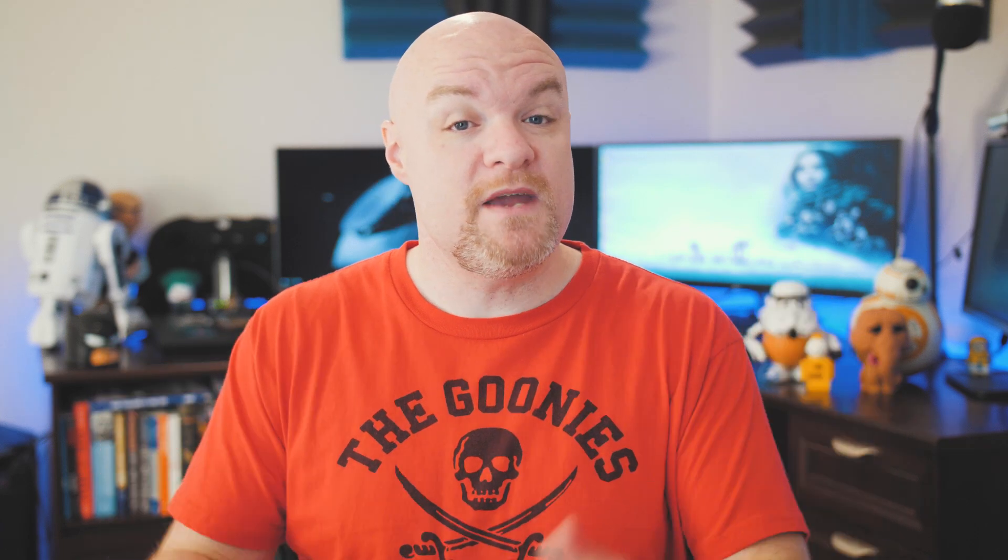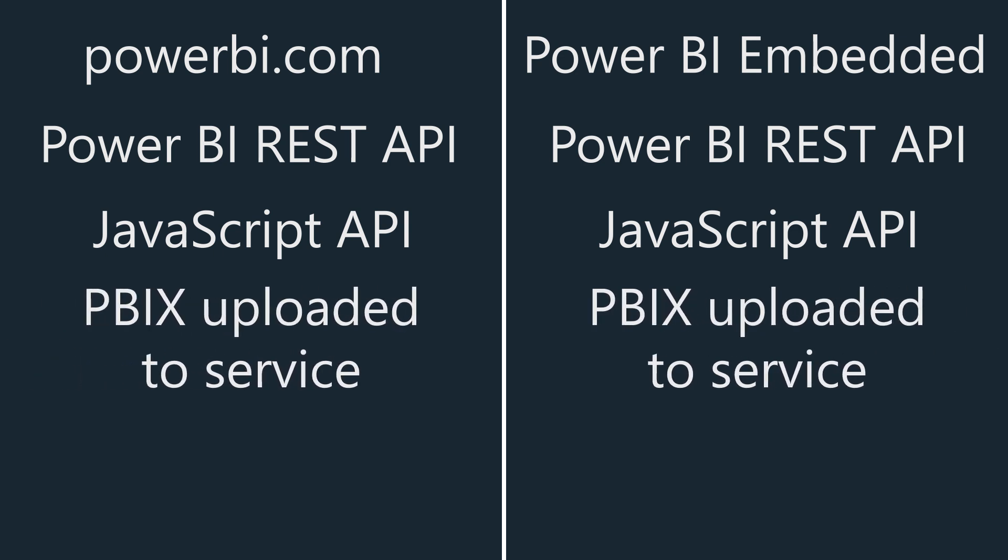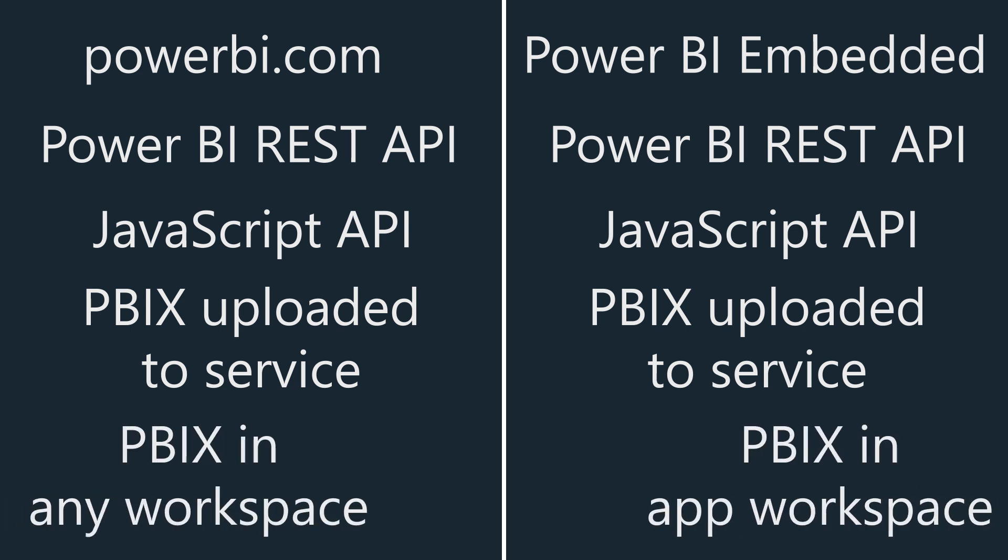In terms of the PBIX file — your report created in Power BI Desktop — you upload that to the Power BI service and it goes into a workspace inside Power BI.com. The one difference on the Power BI Embedded side is that the PBIX file has to exist in an app workspace, whereas for Power BI.com, that PBIX can be in a personal My Workspace as well. When it comes to capacity, whether that's Power BI Premium or Power BI Embedded capacity from Azure, capacity may be involved in both scenarios.